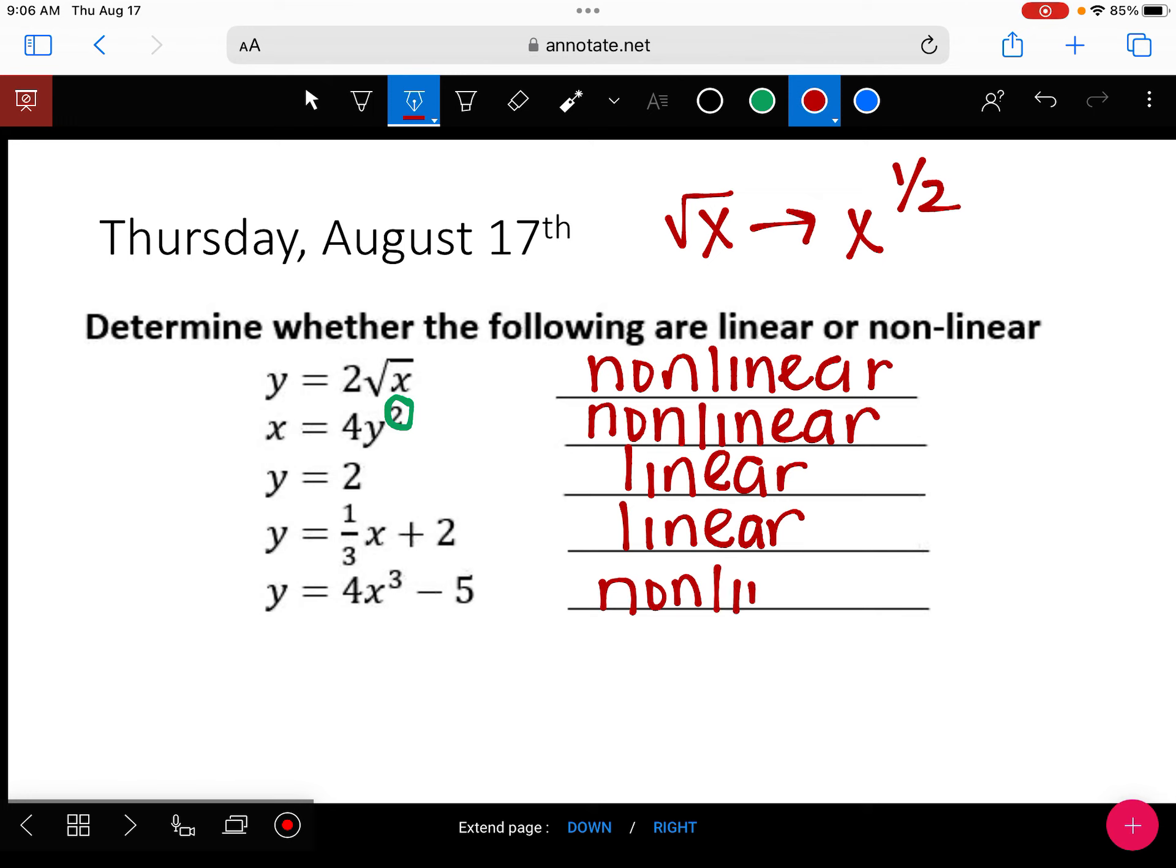So, on the test, I think about four points. And it's like a 31-point test or something like that. But a big part of it is just telling me, looking at an equation, if it's linear or not. So, it's pretty straightforward.